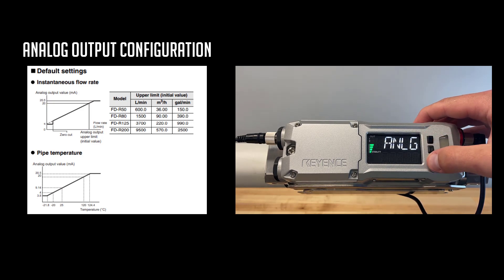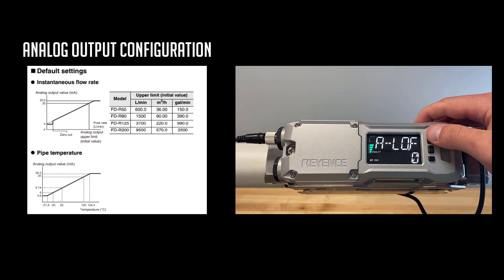Once selected, tap mode one more time. You can see our A-Low value, which is our 4 milliamp or 0 milliamp value. We can cycle that to whatever we need our scale to be. Tap mode one more time. You should see A-High, which is your 20 milliamp value. And again, you can scale this to whatever value you need, so that your PLC or analog input device recognizes that scale of the FDR.